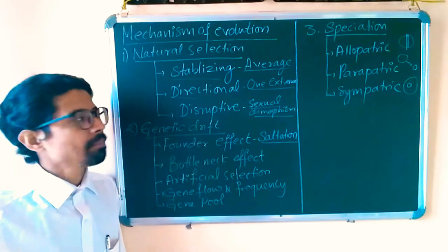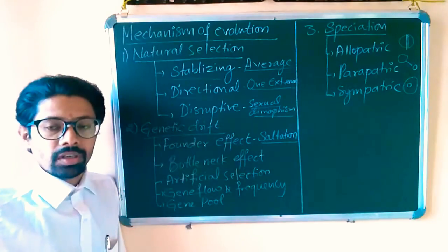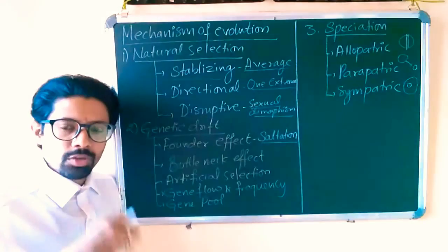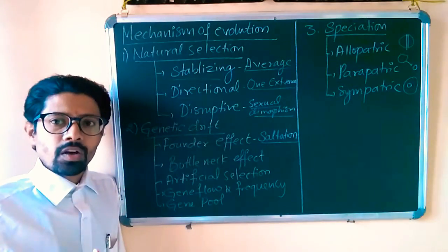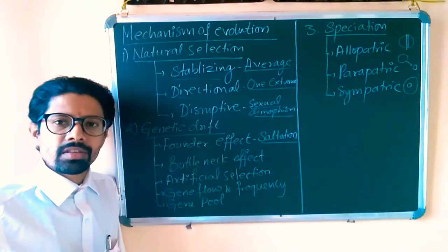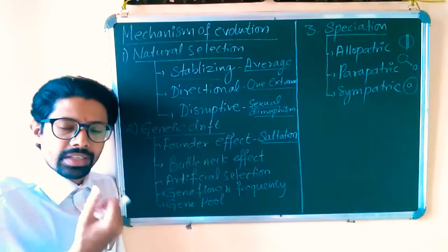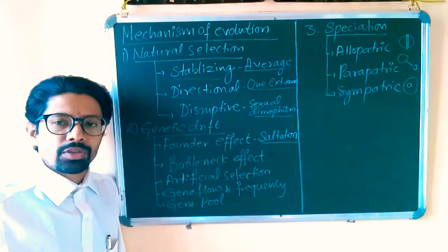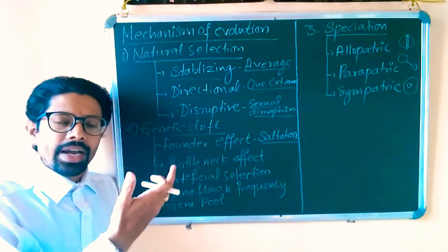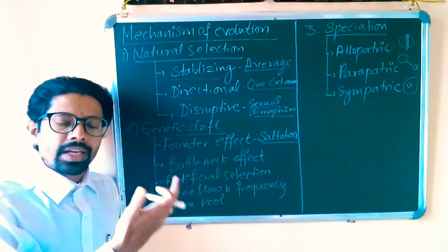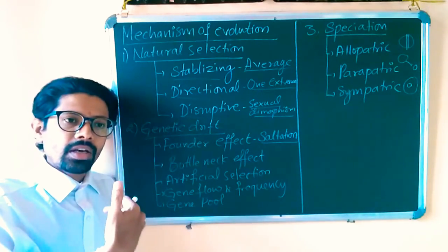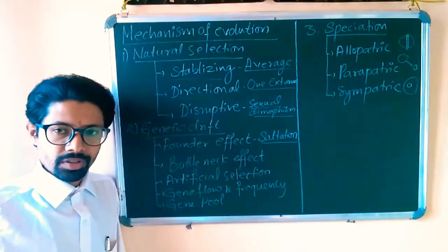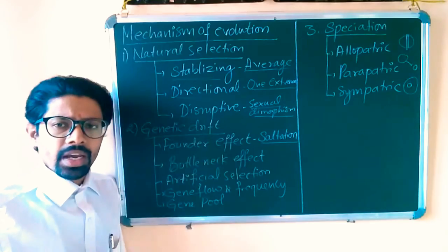If you talk about directional selection, it certainly goes in one direction — it is quite opposite to average. Here, one of the extreme characters is being expressed and naturally selected. For example, tall height of individuals will be naturally selected, as opposed to what occurs in stabilizing selection.